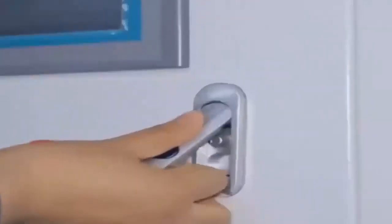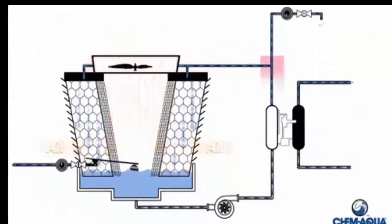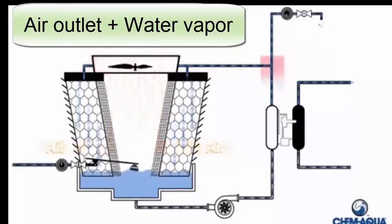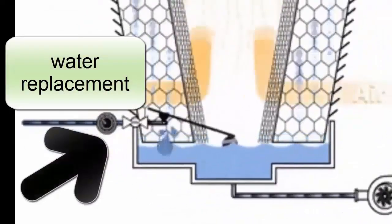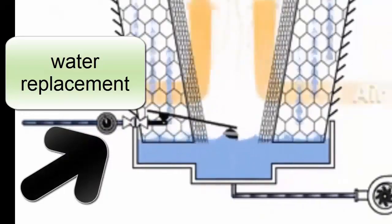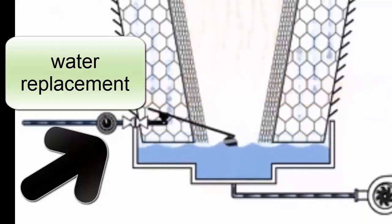In the environmental water circuit, we are going to have constant replacement because there is a process that occurs in the cooling tower. It is a process open to the environment, and a considerable percentage of water begins to evaporate. Therefore, when we talk about a chilled water plant with a water-cooled chiller, we need a reliable and constant water source to constantly inject a new flow of water into this circuit.